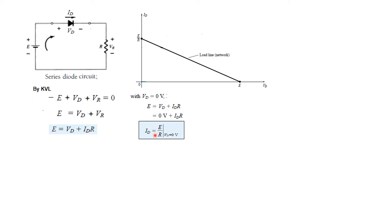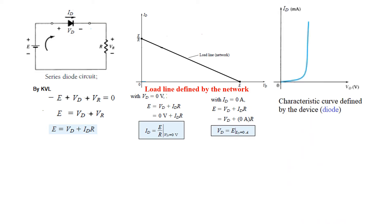So we got Id and we got Vd is equal to E, these two points. Now remember that the load line is defined by the network, not the property or the characteristics of the diode. The characteristics of the diode is a separate thing. It is defined by the type of diode that we are using.